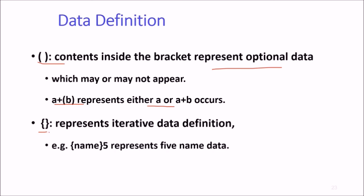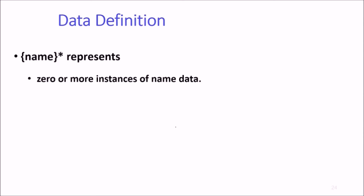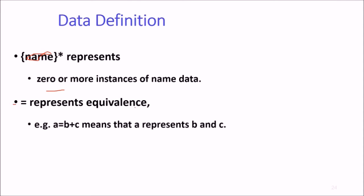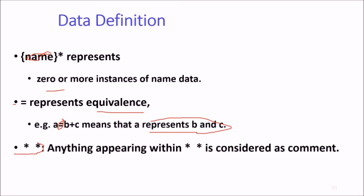Braces or curly brackets represent iterative data definition. For example, file name inside curly braces represents five name data. Name star represents zero or more instances of the name data. Equal sign represents equivalence. For example, A equals B plus C means that A represents B plus C. Star and star, anything within is considered a comment.